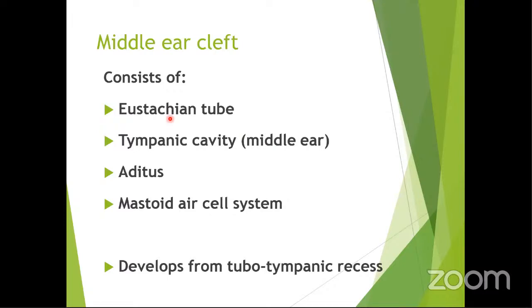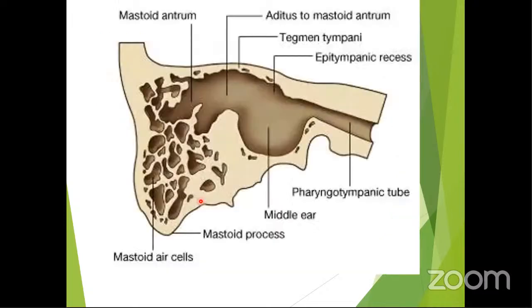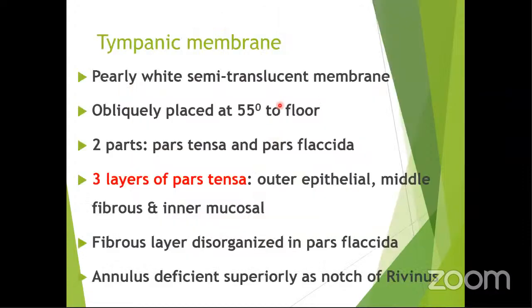The most commonly asked question for undergraduates in ENT is the anatomy of the middle ear cleft. The middle ear cleft consists of the tympanic cavity, the Eustachian tube, and the mastoid air cell system. It develops from the tubo-tympanic recess, which is from the first and second pharyngeal pouches. The mastoid air cell system includes various air cells and the antrum, which is the largest mastoid air cell. The Eustachian tube — also called the pharyngotympanic tube — connects the tympanic cavity to the nasopharynx.